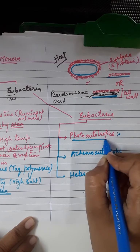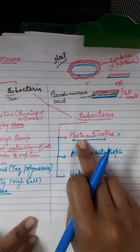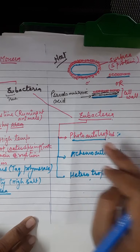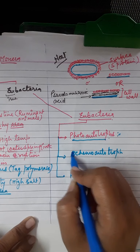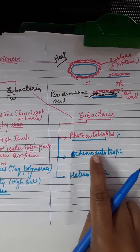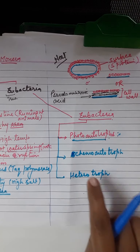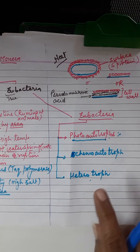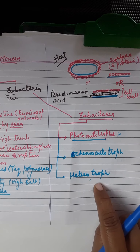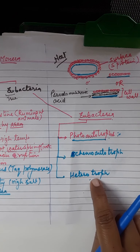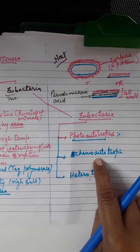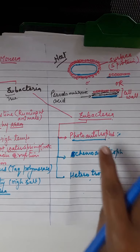Photo autotrophs are bacteria that synthesize their food in the presence of sunlight, including cyanobacteria, which will be discussed in the next video. Chemo autotrophs also synthesize their own food but using certain chemicals rather than sunlight. Heterotrophs are dependent on other organisms for food, mostly parasitic and disease-causing. Chemo autotrophs are mainly responsible for recycling minerals.